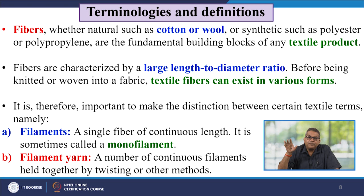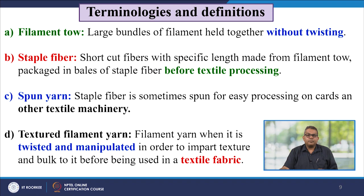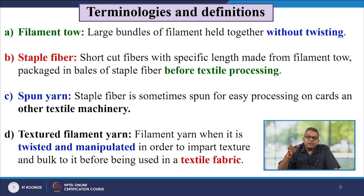Textile fibre can exist in various forms, so it is important to distinguish between certain textile terms. A filament is a single fibre of continuous length, sometimes called a monofilament. Filament yarn is a number of continuous filaments held together by twisting or other methods. Filament tow is a large bundle of filaments held together without twisting. Staple fibre is a short cut fibre with a specific length made from a filament tow, packaged in bales before textile processing. Spun yarn is staple fibre spun for easy processing on cards and other textile machinery. Textured filament yarn is filament yarn twisted and manipulated to impart texture and bulk.